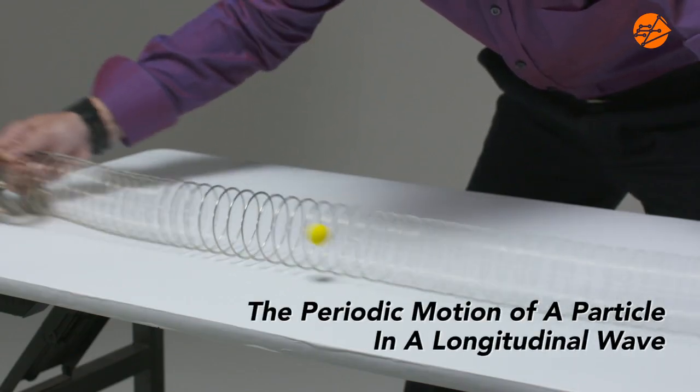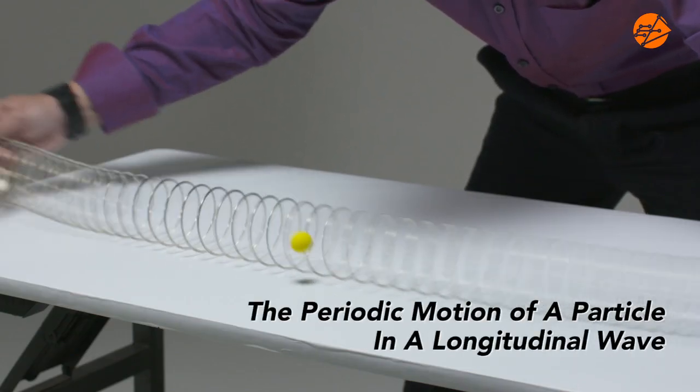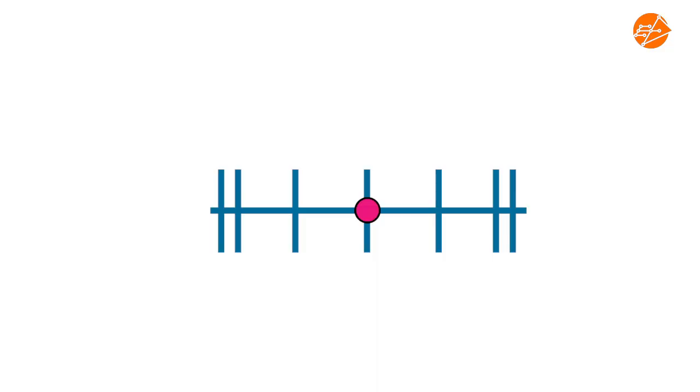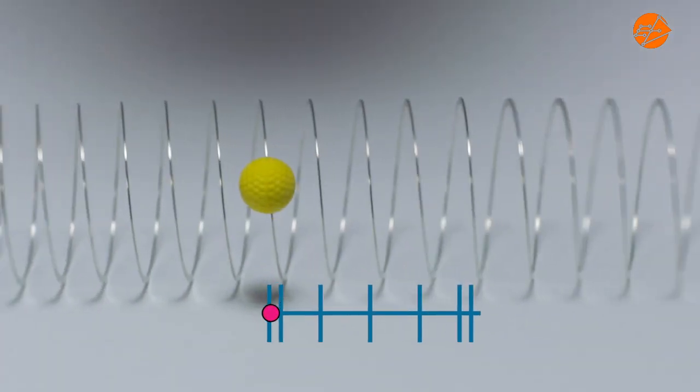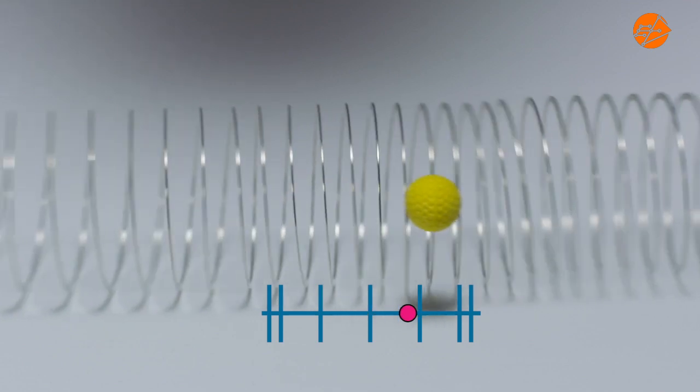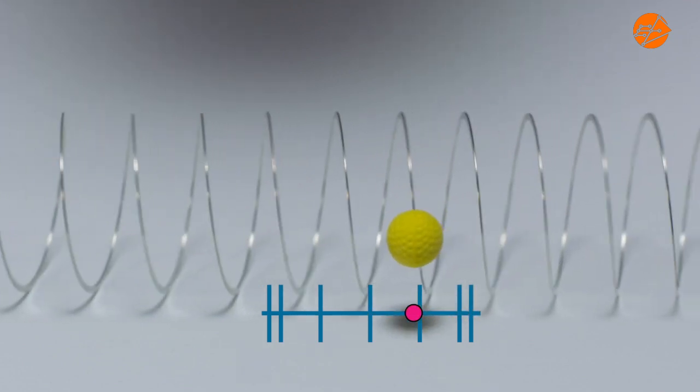Let's study the motion of a single particle in a slinky. I will be using this single particle representation to model the motion of one particle in the longitudinal wave. This is how the corresponding motion of a single particle in a slinky is represented by the model.